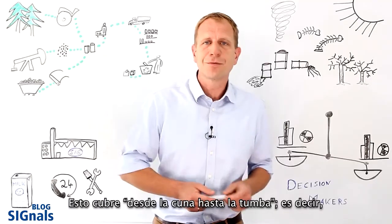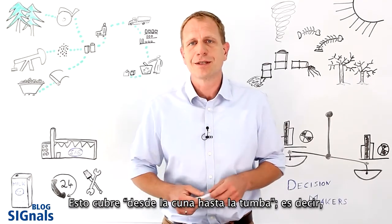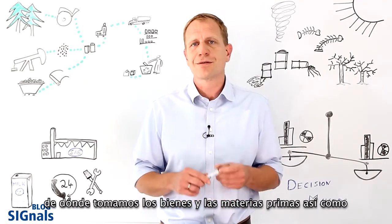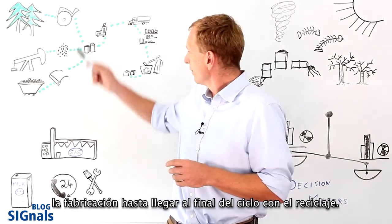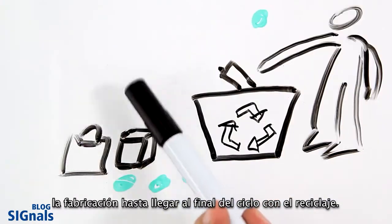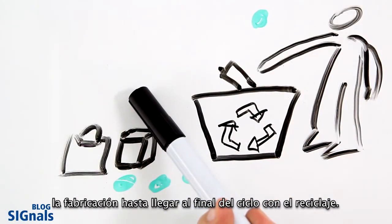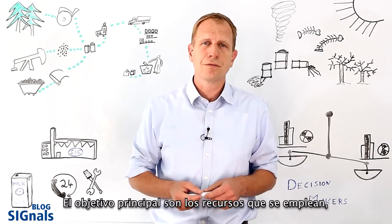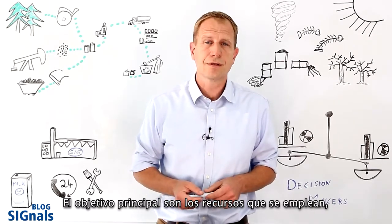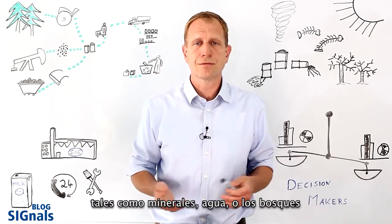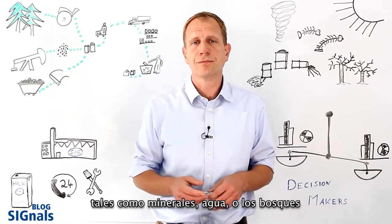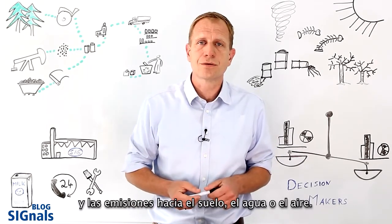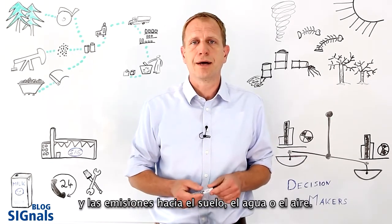The scope is from cradle to grave. That means where we take the ores and raw materials from, through manufacturing, and down to the product life cycle to recycling. The main focus are the resources that are used — like ores, water, or forests — and the emissions to soil, water, and air.